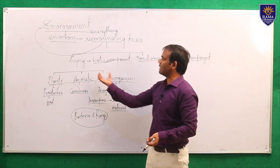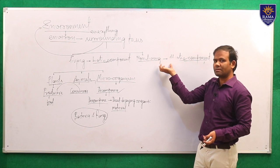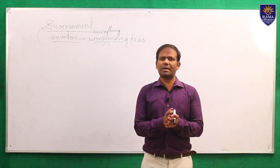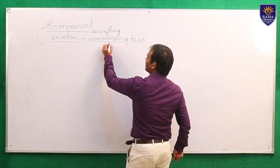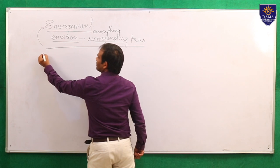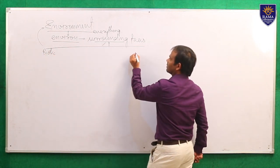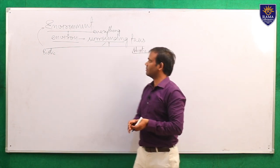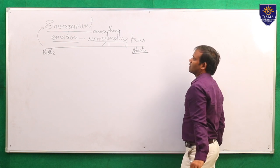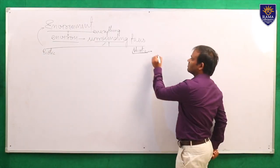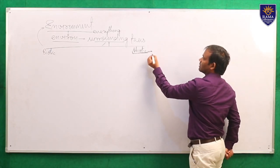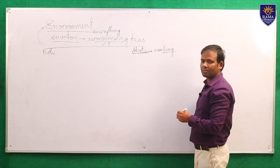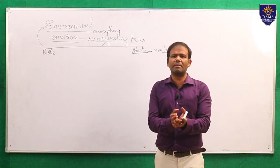So this is about the living things. In our environment there are two components — biotic and abiotic. We have discussed already about the biotic component. Now I am going to start discussing the abiotic components. Abiotic components are the non-living component of the environment. So what are the things which are non-living in our surrounding?